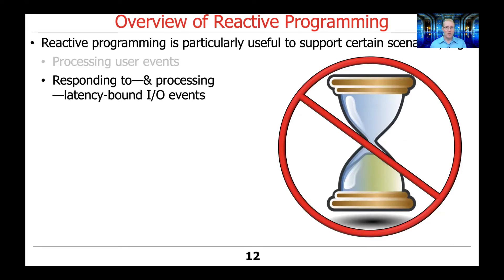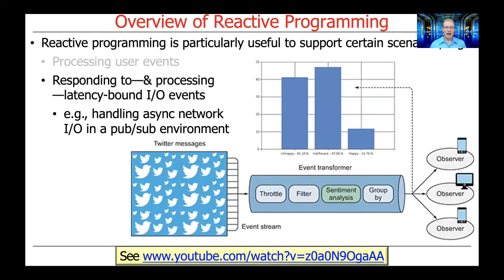Another use case that reactive programming is very well suited for is to respond to and process latency-bound I/O events. The idea here is to avoid blocking and to avoid making the system non-responsive. A good example would be handling asynchronous network I/O in a publisher-subscriber environment — for example, a Twitter feed sending out various tweets or messages, which would be put through a pipeline of event transformers that filter events, search for various types, perhaps do sentiment analysis to see what tweets are trending, group tweets together, and then disseminate them to one or more observers who may want to listen to subsets of those events and display them.